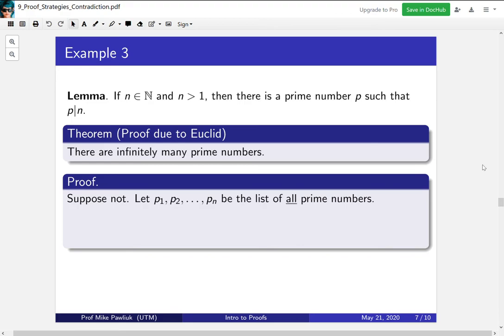Our goal is to come up with a contradiction. And what we're going to contradict is that these are all of the prime numbers. We're going to come up with a new prime number. Basically.